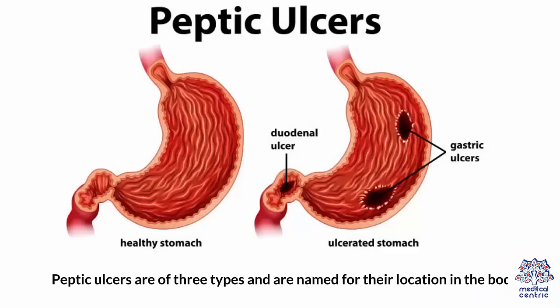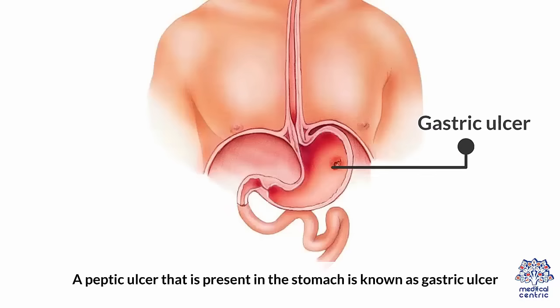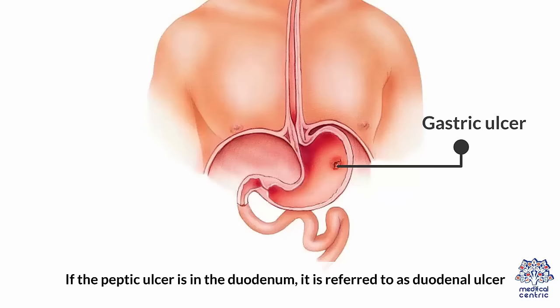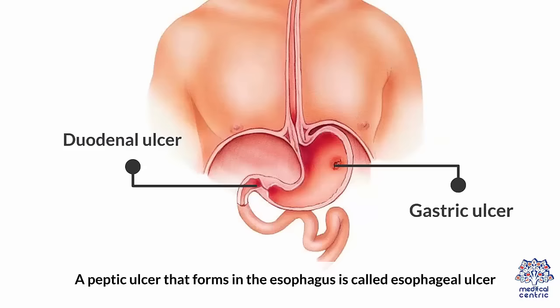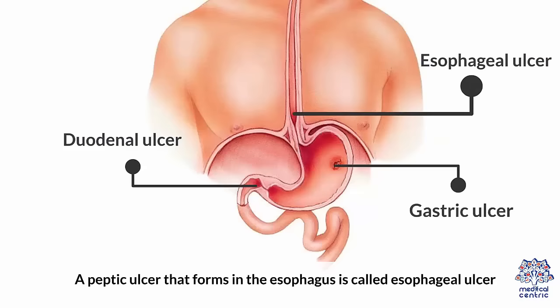Peptic ulcers are of three types and are named for their location in the body. A peptic ulcer that is present in the stomach is known as gastric ulcer. If the peptic ulcer is in the duodenum, it is referred to as duodenal ulcer. A peptic ulcer that forms in the esophagus is called esophageal ulcer.